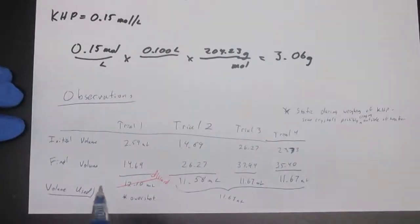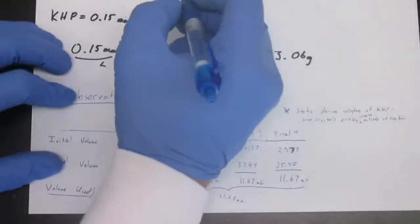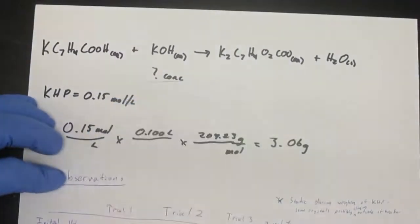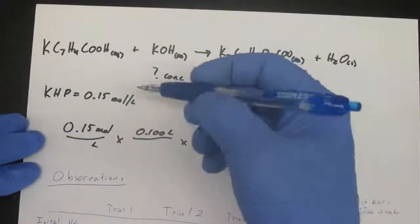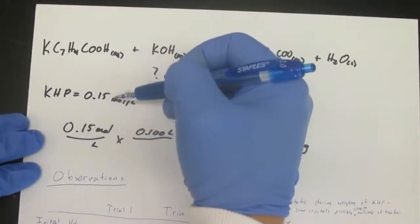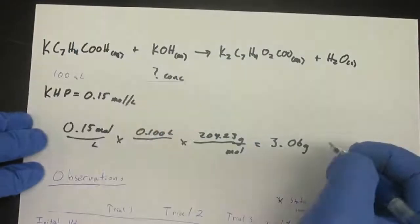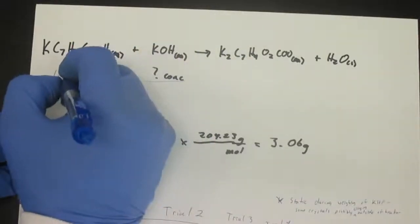We do not know the concentration of potassium hydroxide, but we know that for 0.15 moles per liter KHP, using 10 milliliters of that which we pipetted into our sample, uses 11.64 milliliters of the potassium hydroxide.